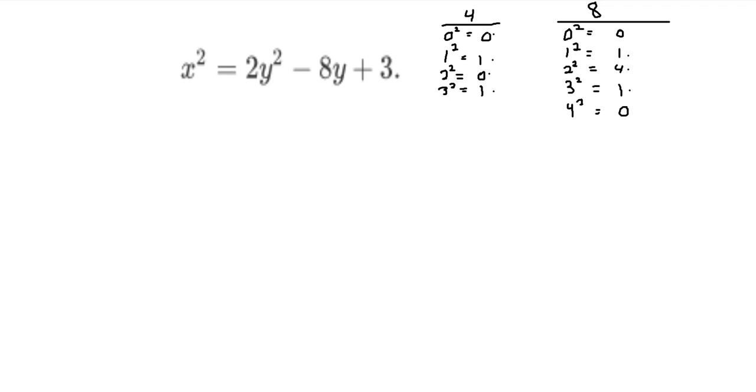So essentially, if we take a number mod 8, and we look at a number squared mod 8, it can only be 0, 1, or 4. Those are the only three possibilities.